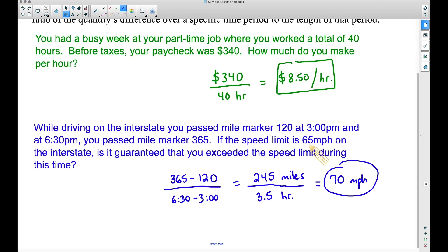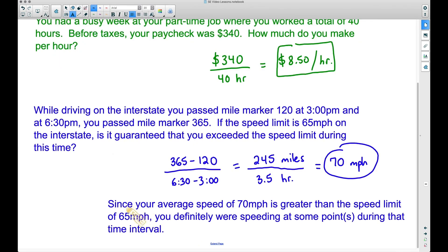Sure, there probably were times, maybe in slower traffic, where you were going slower than the speed limit. But if your average speed is higher than the speed limit, guaranteed you exceeded the speed limit at some point in that trip. So take note what I have written right here. Since your average speed of 70 miles per hour, that's what we found out here, is greater than the speed limit of 65 miles per hour. You definitely were speeding at some point or some points during that trip, during that time interval.